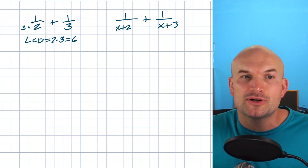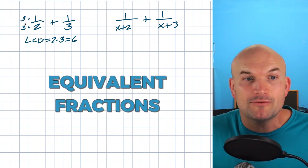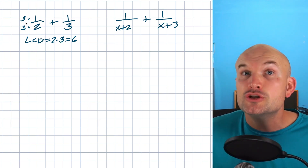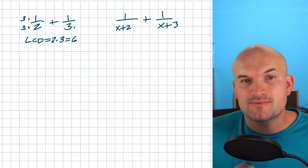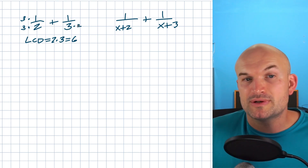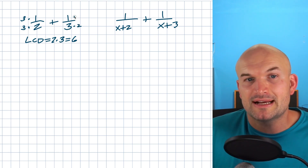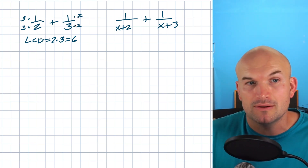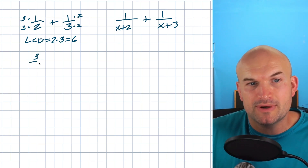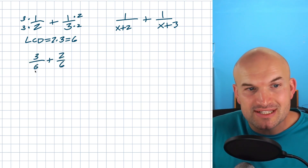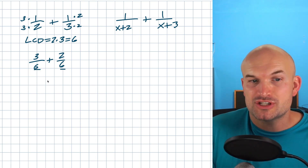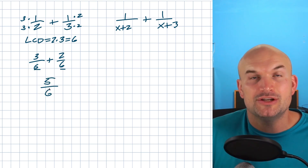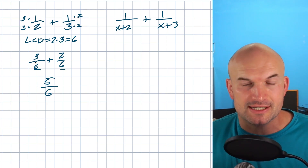We need to make sure we're producing what we call equivalent fractions. So whatever we do in the denominator, we have to do in the numerator. And the same thing on the right-hand side — if I want three to become six, I'm going to multiply by two, so three times two is six, and I'm going to do that on the top as well. So now when I simplify this, I get three over six plus two over six. The denominators are exactly the same, and three plus two equals five, so the final answer is five over six.